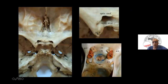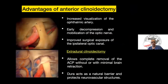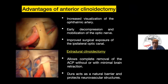The key structures include the anterior clinoid process, optic roof, optic canal, and the optic strut — the piece of bone between the superior orbital fissure and optic canal. The advantages of anterior clinoidectomy are increased visualization, early decompression and mobilization of the optic nerve, and improved surgical exposure of the ipsilateral optic canal.